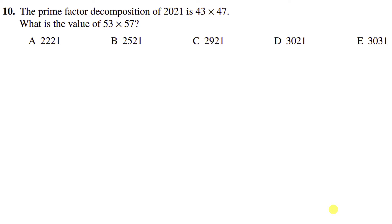So let's start with the first one, the prime factor decomposition of 2021 is 43 times 47. What is the value of 53 times 57? Now, I'm sure there's lots of ways to do this, but what immediately came to me was to do this.